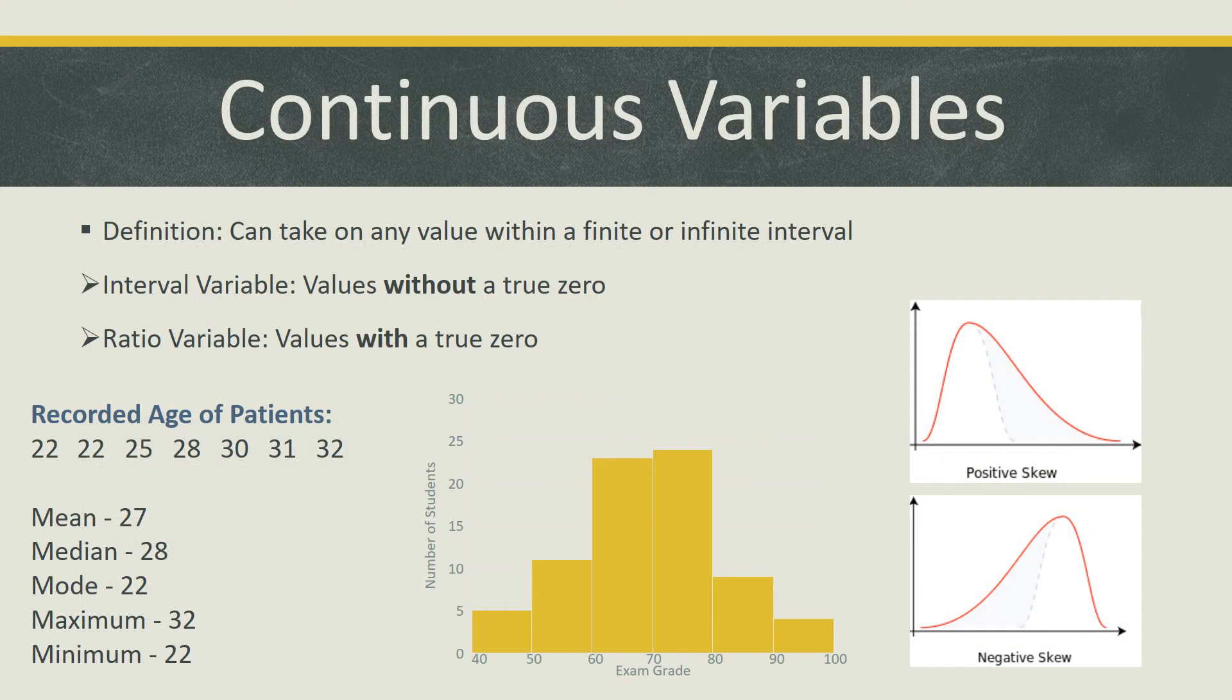Unlike categorical variables, continuous variables can take on any value within a finite or infinite interval. These can further be broken down into interval and ratio variables.